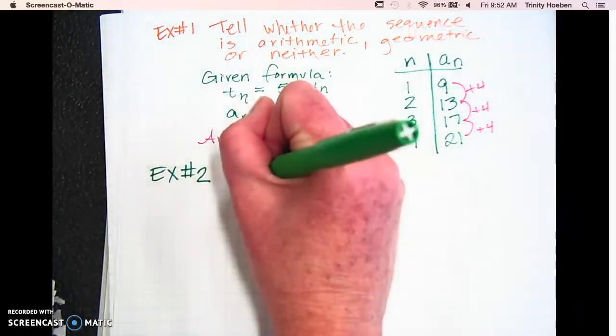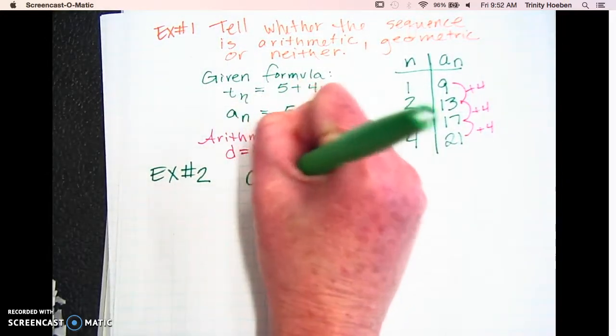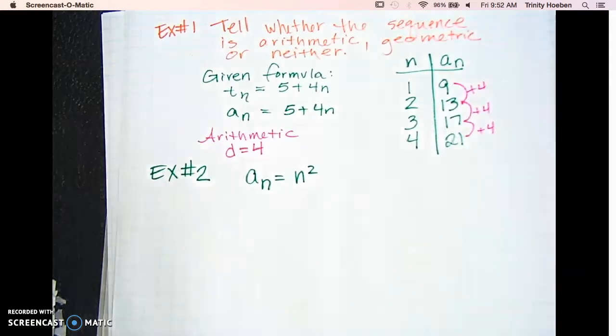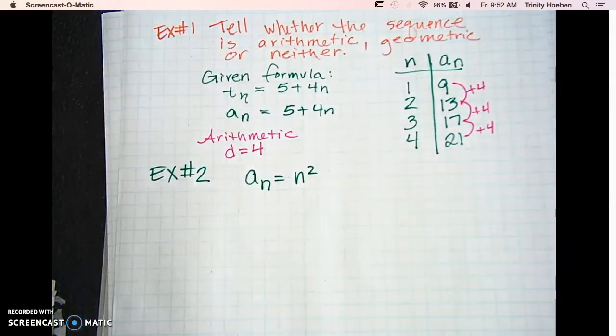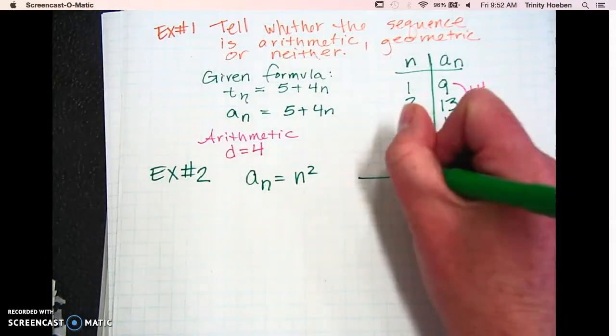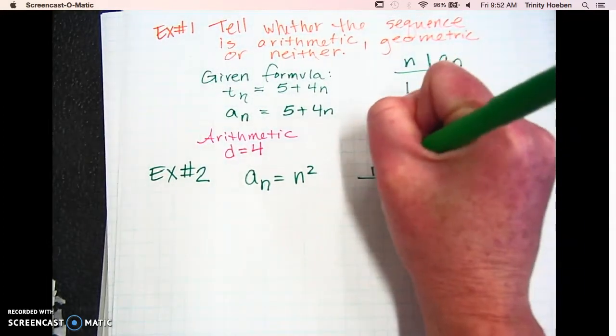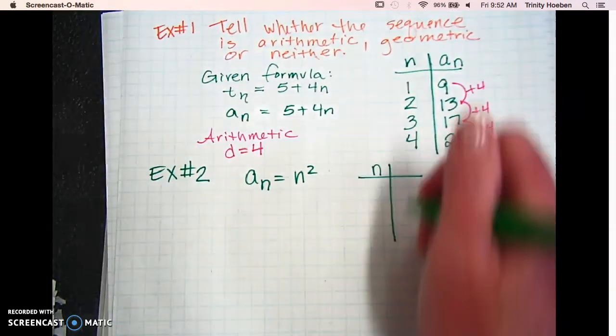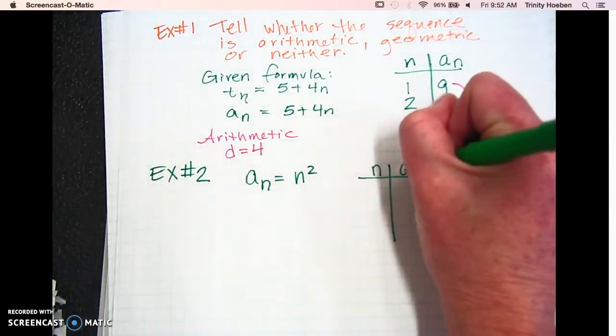All right. Example number two. A sub n equals n squared. Same direction, so I'm not going to have you write them again. But basically, you're going to tell whether the sequence is arithmetic, geometric, or neither. So let's make another t-chart. We're going to plug in some numbers for n. We're going to spit out some numbers for a sub n.